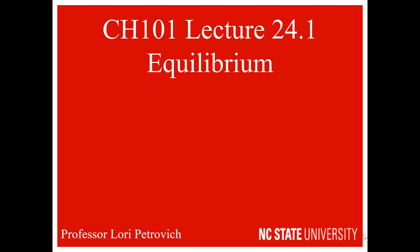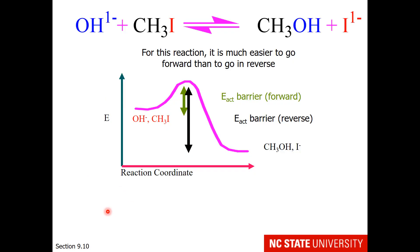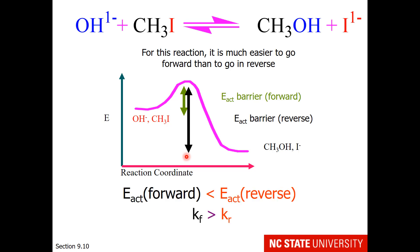The next part of thermochemistry concerns equilibrium. Consider this reaction in which the energy of activation forward is less than the energy of activation reverse. This means that the forward rate constant is greater than the reverse rate constant. If we start with all reactants, the initial rate forward will be greater than the initial reverse rate.